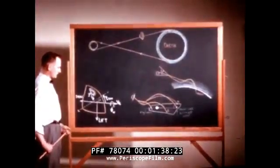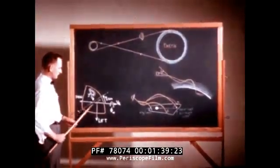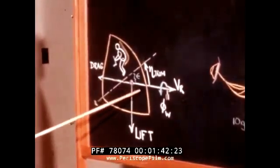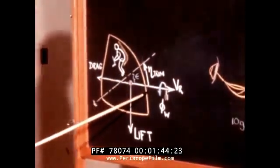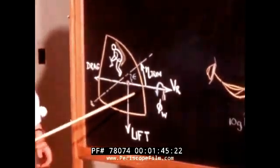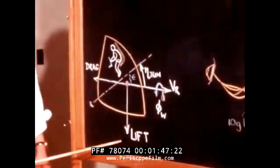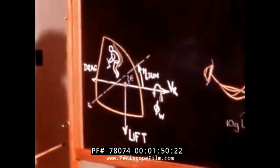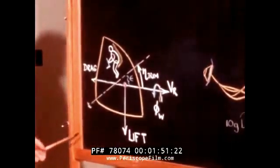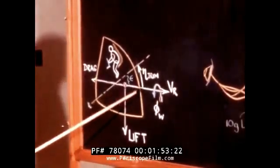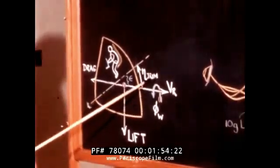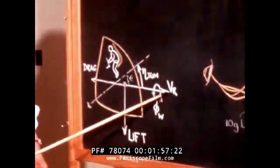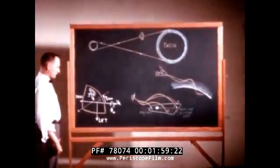The Apollo is a fixed-trim vehicle using a center of gravity offset to obtain a fixed-trim angle which provides a fixed lift direction with respect to the vehicle. A stabilization reaction control system has been devised which provides rate command in roll about the relative total velocity vector by coupling both body roll and yaw jets.